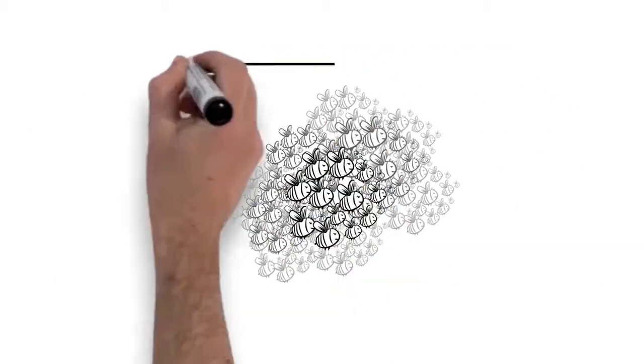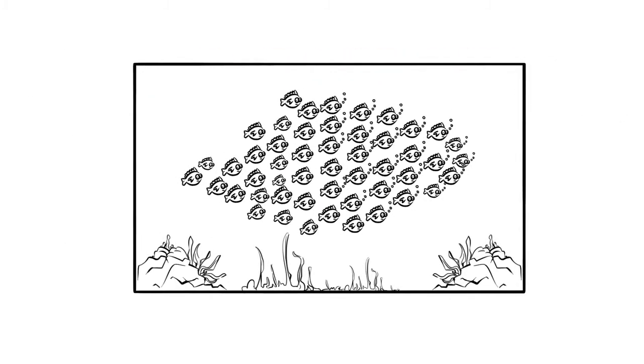Why do birds flock, bees swarm, fish school, and ants form colonies?